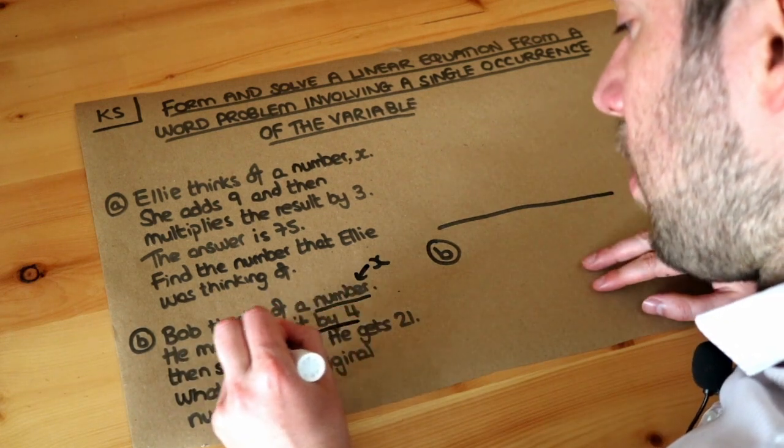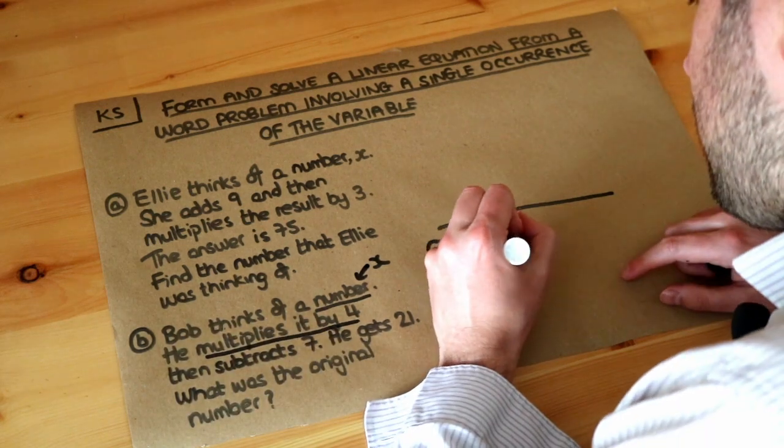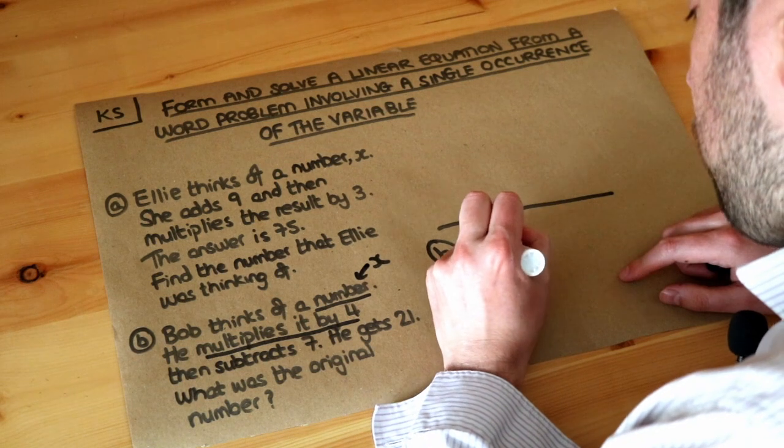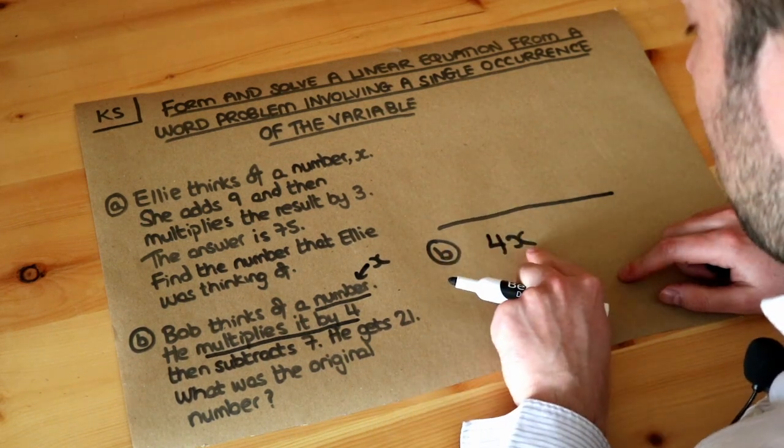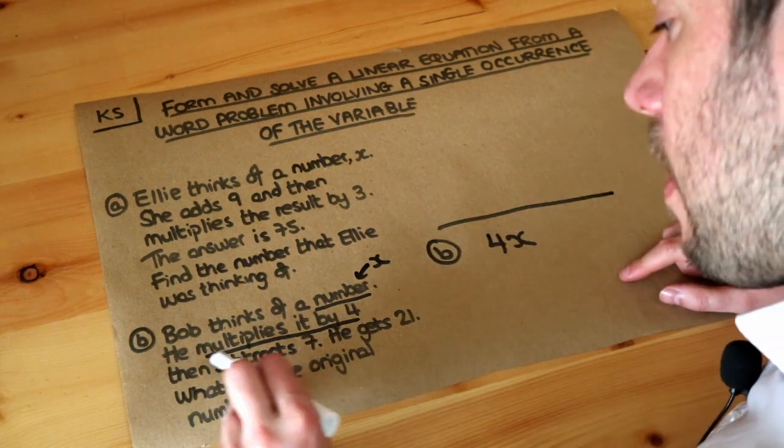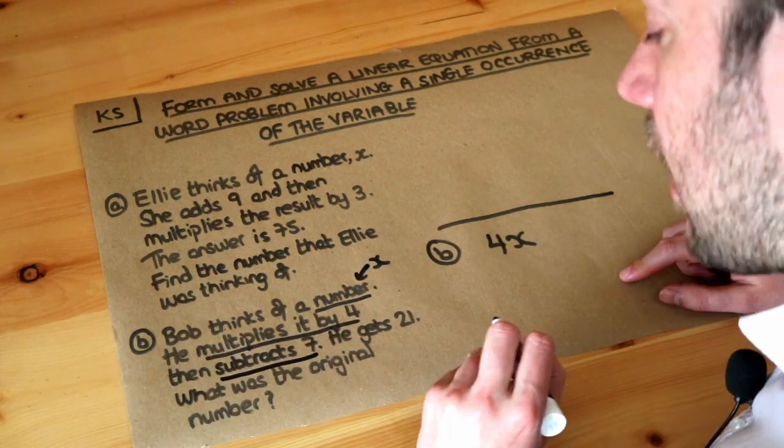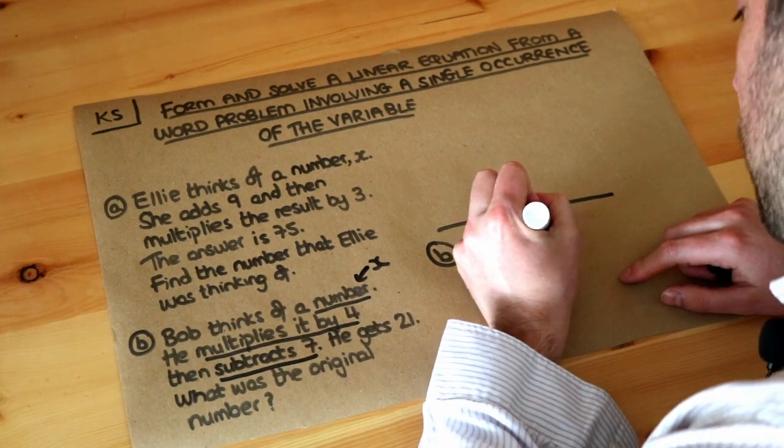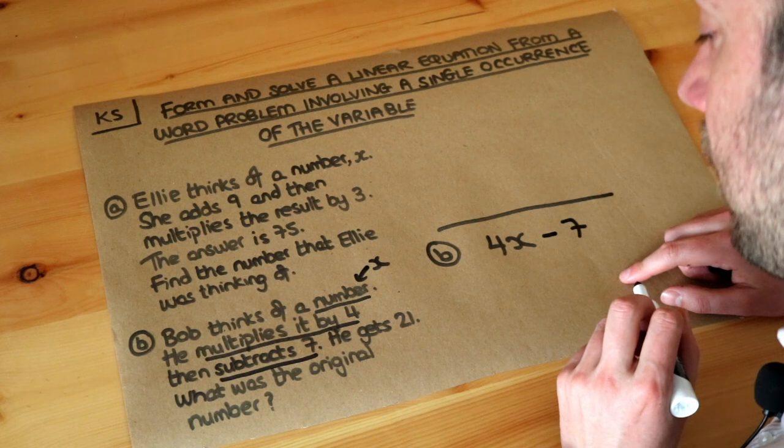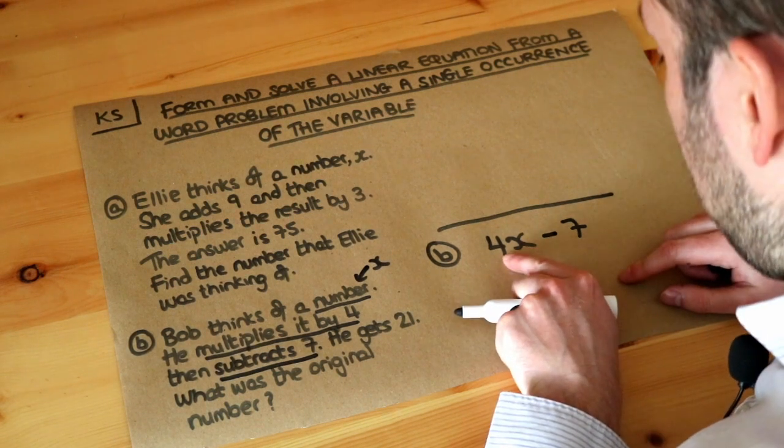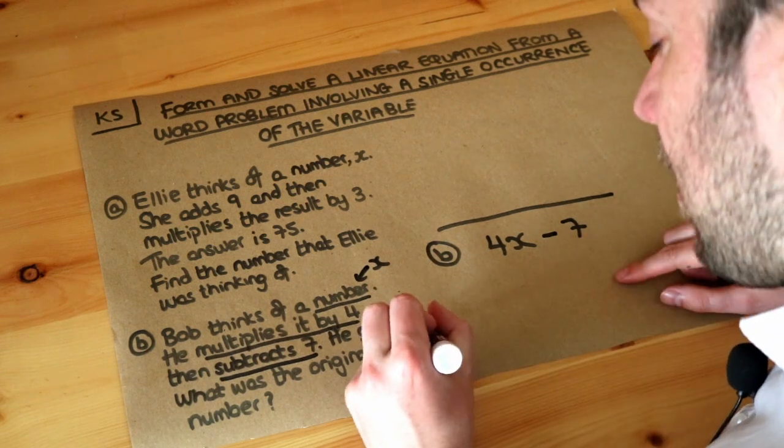He multiplies that number by four, so you've got x, and Bob multiplies that by four. We write 4x. Remember, 4x means four lots of x, x times four - same thing. Then from that result, 4x, Bob subtracts seven. So you've got the original number x, Bob multiplied it by four, then subtracted seven, and he gets